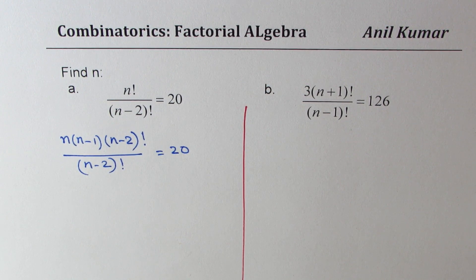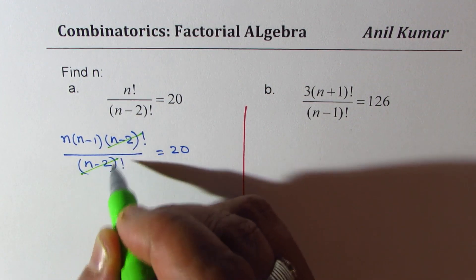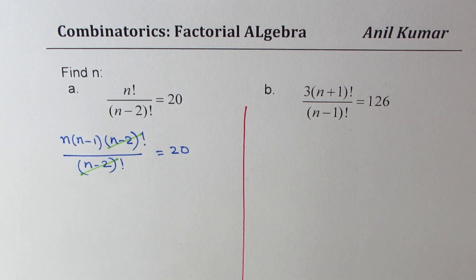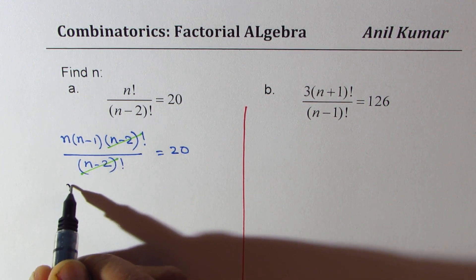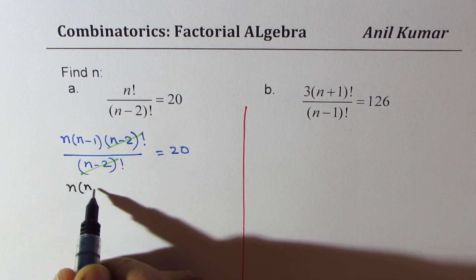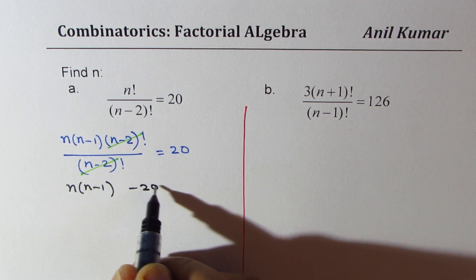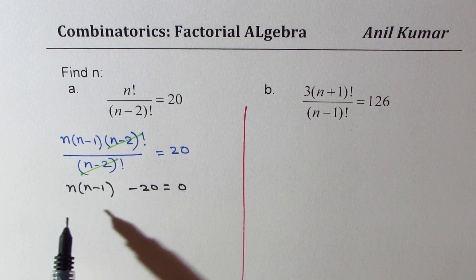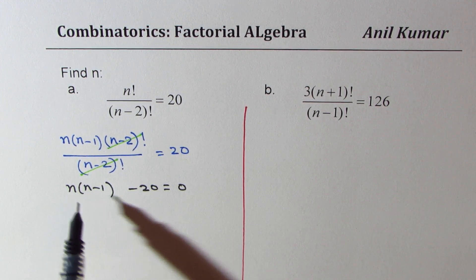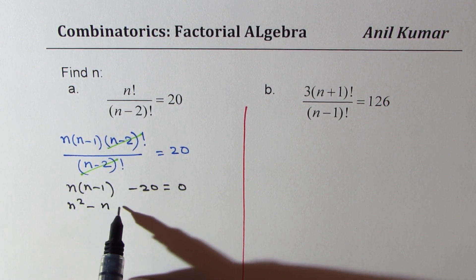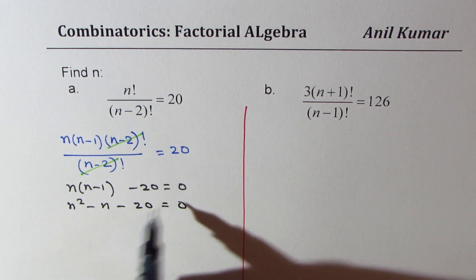Now, (n-2) factorial cancels out. You are left with a quadratic equation which is n times (n-1). Bringing 20 to this side, minus 20 equals 0. This is n² - n - 20 = 0.